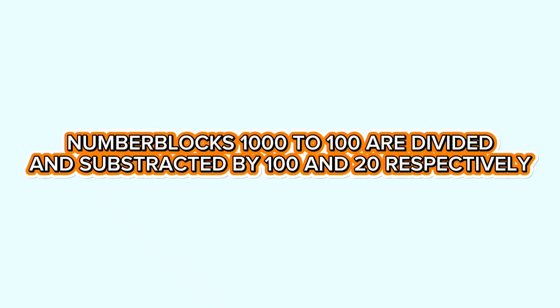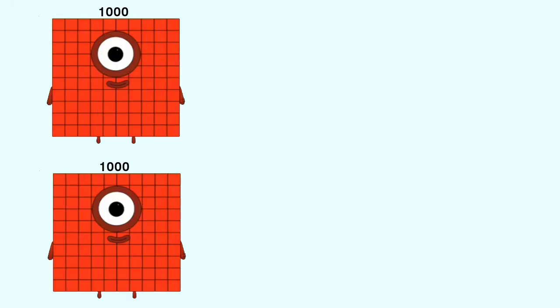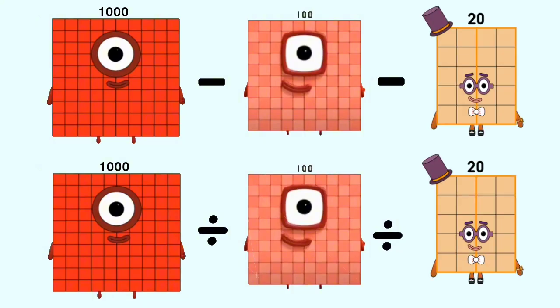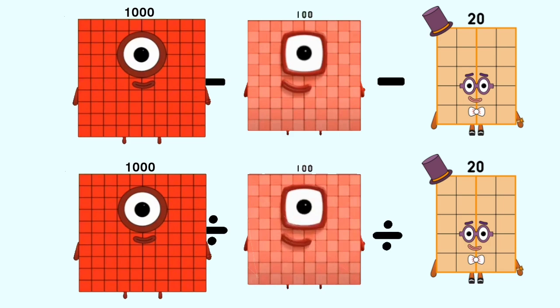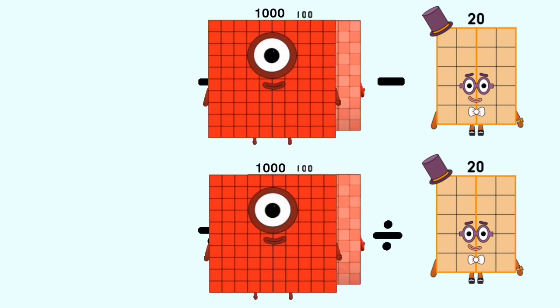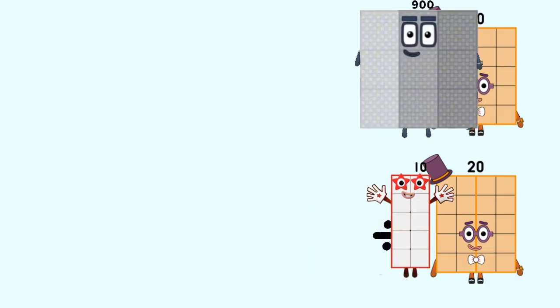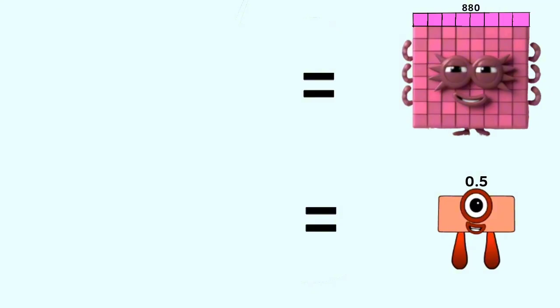Number blocks 1000 to 100 are divided and subtracted by 120 respectively. Number blocks 1000 minus 100 and divided by 100 equal 900 and 10. Number blocks 900 and 10 minus 20 and divided by 20 equal 880 and 0.5.